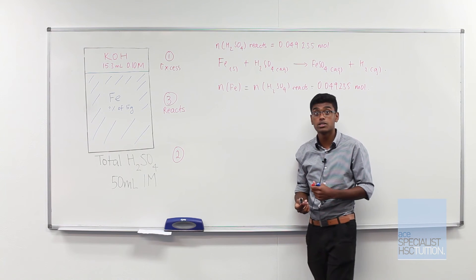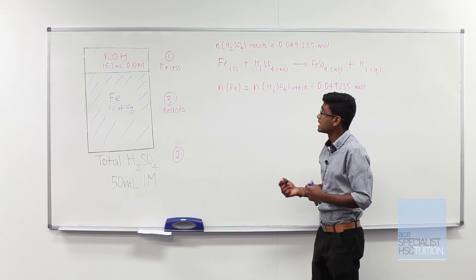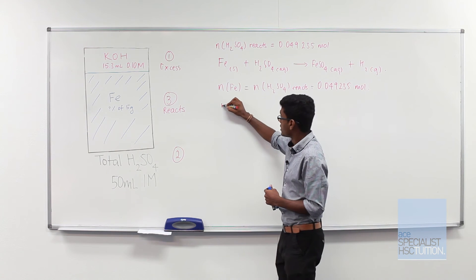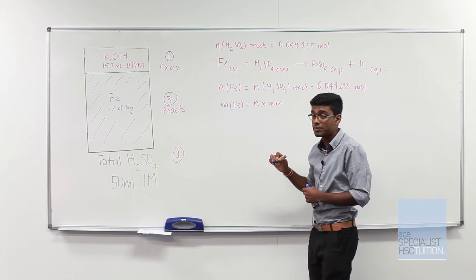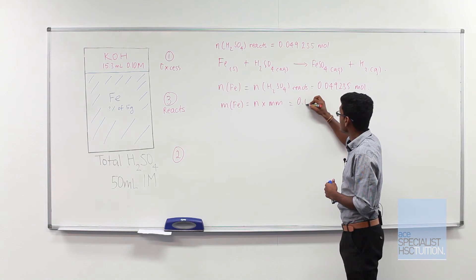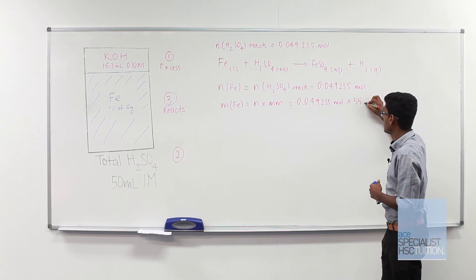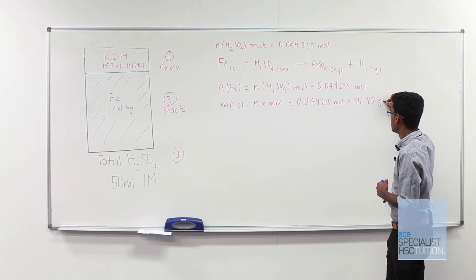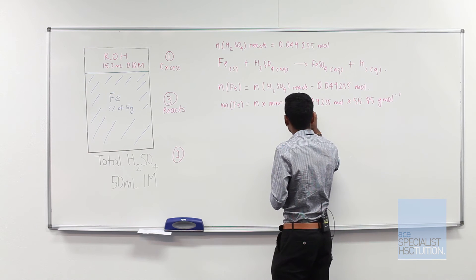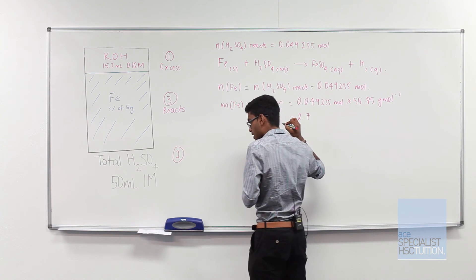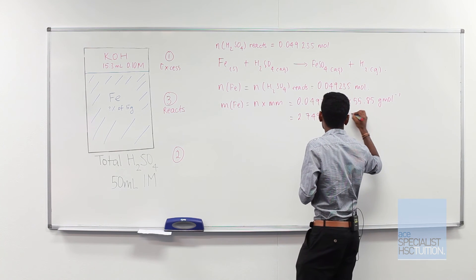Now our question wants us to calculate the mass of iron as a percentage of 5 grams. So we need to calculate the mass of iron. So mass of iron equals number of moles times molar mass. So 0.049235 moles times 55.85 grams per mole which is the molar mass of iron. That gives us a total mass of 2.74977475 grams.